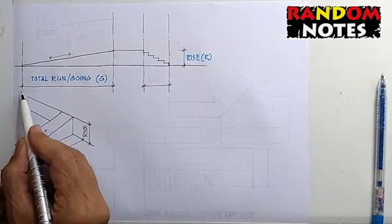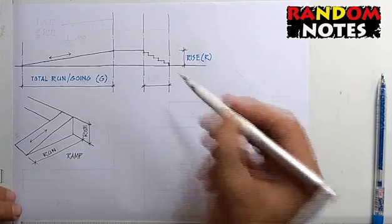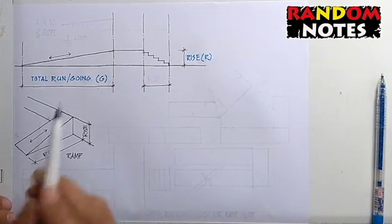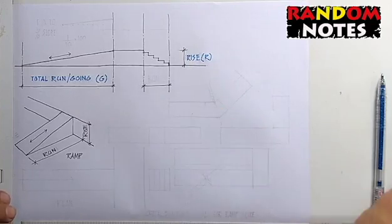This is the total run or going of the ramp and this is the rise. The steps have the same rise but the run is smaller.